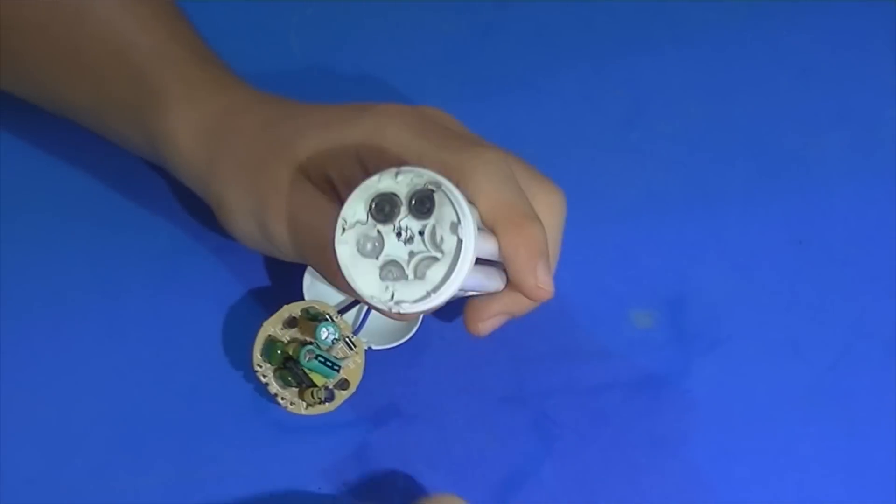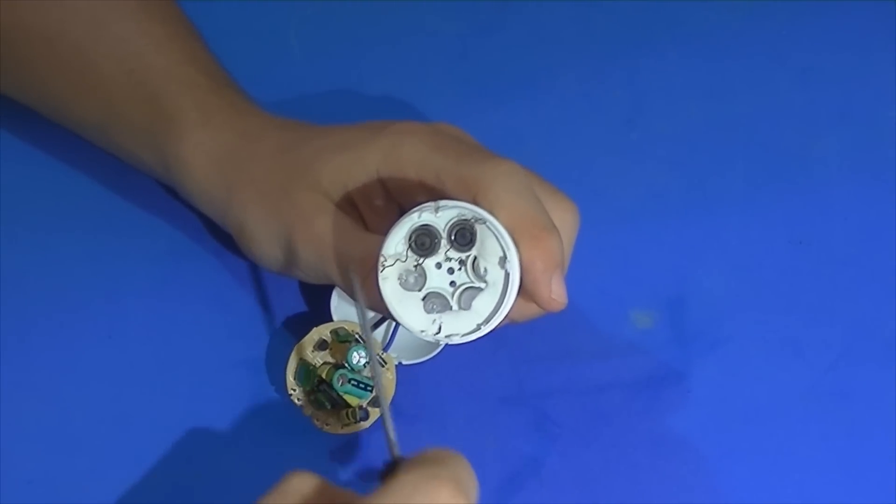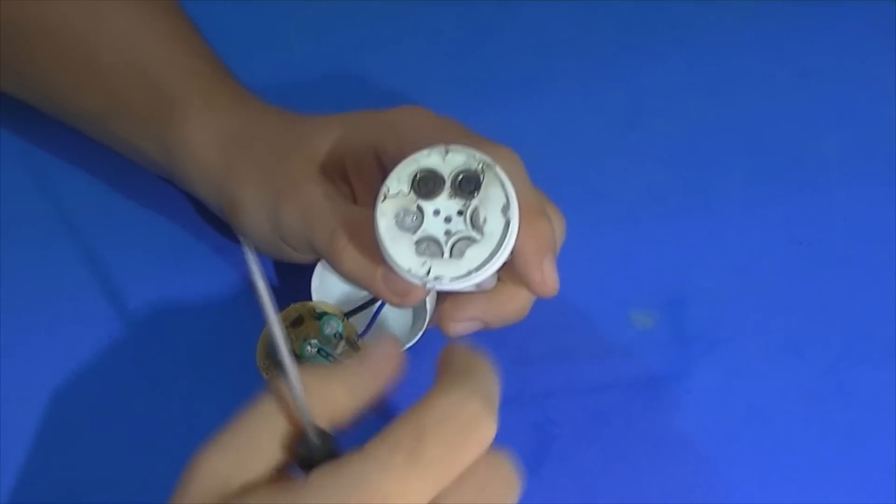Ah, um detalhe pessoal. Aqui você pode observar que tem 4 pedacinhos de um araminho. É o filamento que passa aqui por dentro da lâmpada fluorescente.